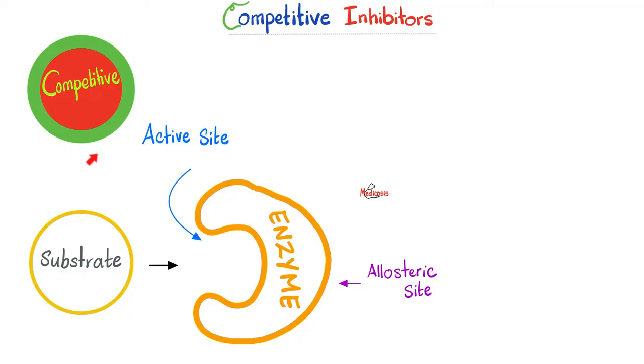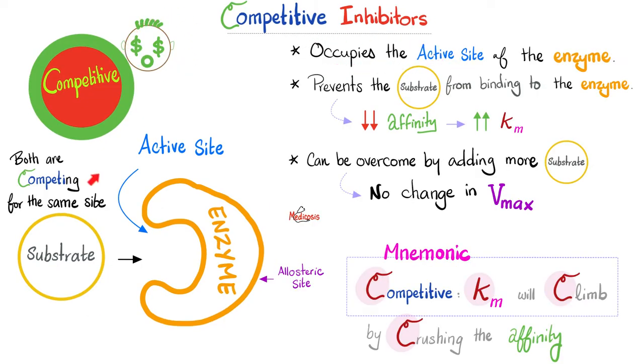Let's do it again. Cody, the competitive capitalist, will bind to the active site, preventing the substrate from binding to the enzyme. The substrate will feel betrayed, because someone else is occupying the heart of the enzyme. The affinity between them will go down. Km will go up. But since we can kick Cody's butt out of the active site, it is reversible. It can be overcome. That's why the Vmax will remain unchanged. Competitive inhibitors, such as Cody the capitalist, occupies the active site of the enzyme, preventing the substrate from binding to the enzyme, which lowers the affinity but raises the Km. Can we overcome Cody? Yes, we can, because it is reversible. Therefore, there is no change in the Vmax, since you can overcome Cody. The mnemonic is Cody the capitalist is a competitive inhibitor, which means Km will climb upwards. How did we do this? By crushing the affinity downwards. And the Vmax will not change.